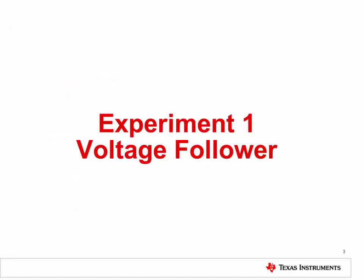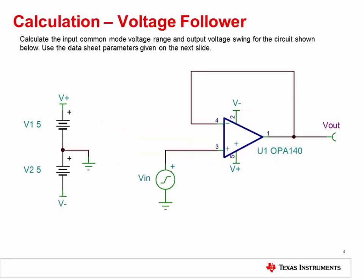In Experiment 1, we'll determine the effects of input and output limitations in a basic voltage follower or unity gain buffer circuit. First, calculate the input common mode voltage range and output voltage swing for the circuit shown here, using the techniques and equations given in the input-output limitations lecture. Use the datasheet parameters given on the next slide.